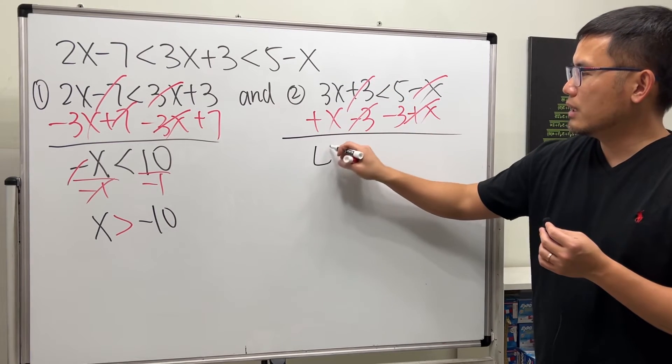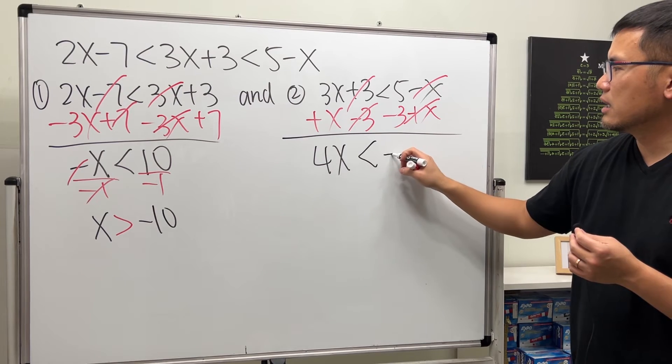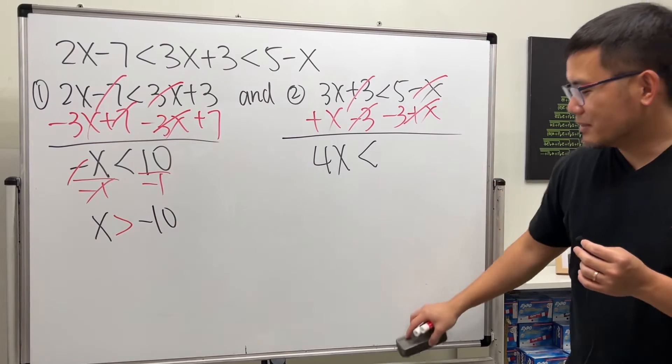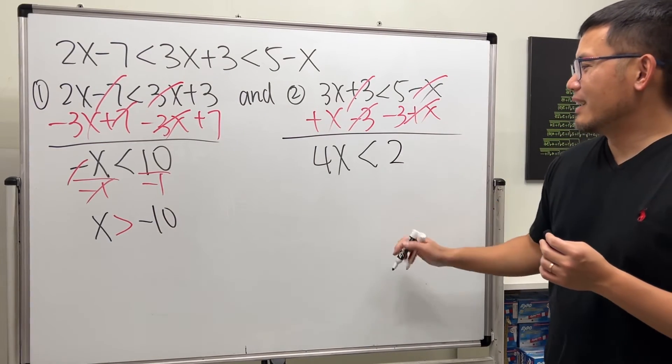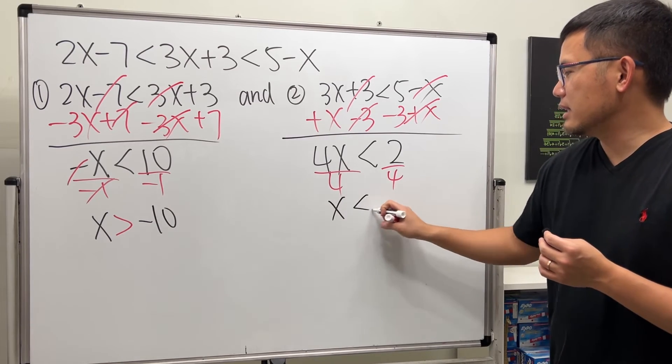So that's 4x. That's less than this and that is negative. No, 5 minus 2. No, that's the answer. 5 minus 3 is 2. And then divide both sides by 4. So x is less than 1 half.